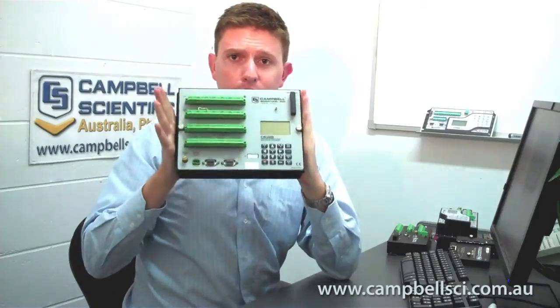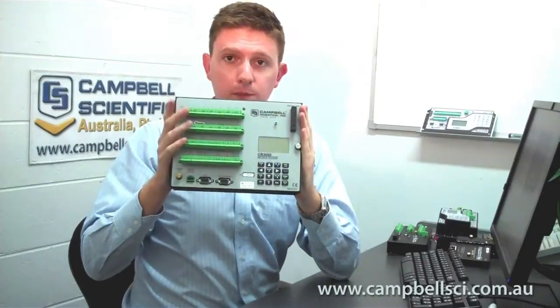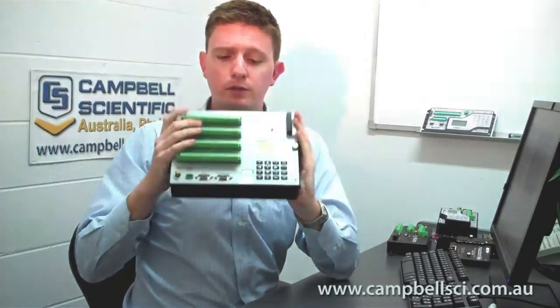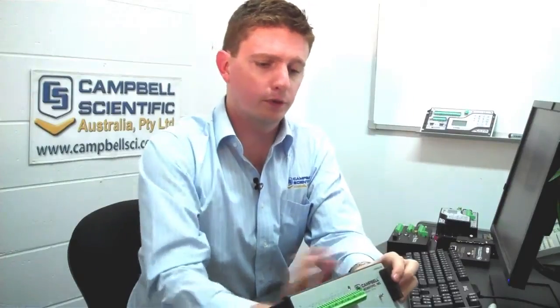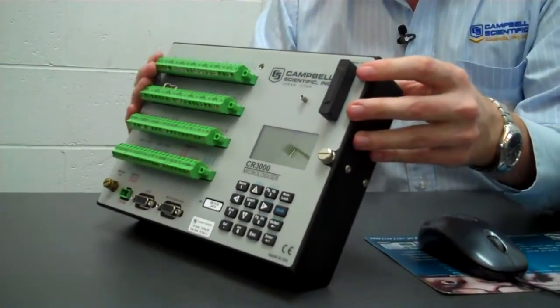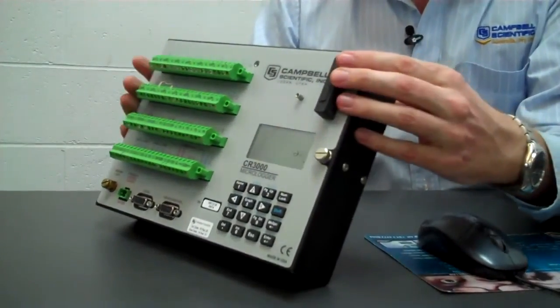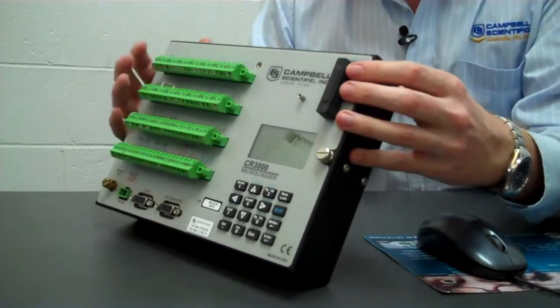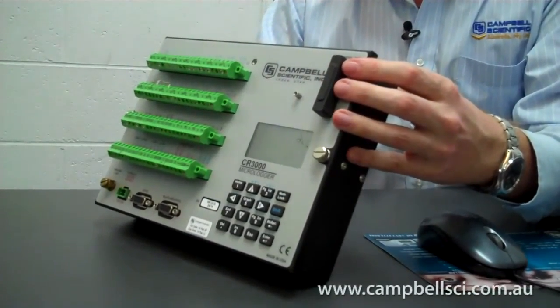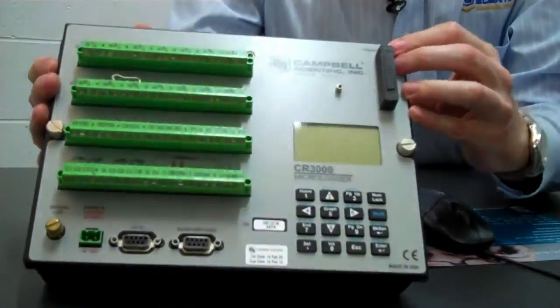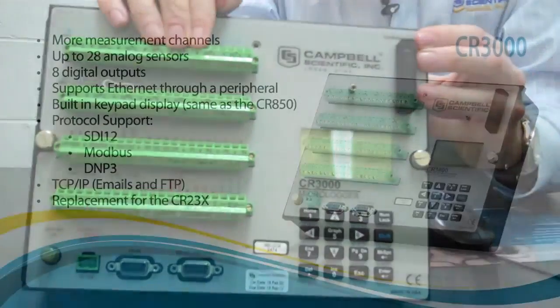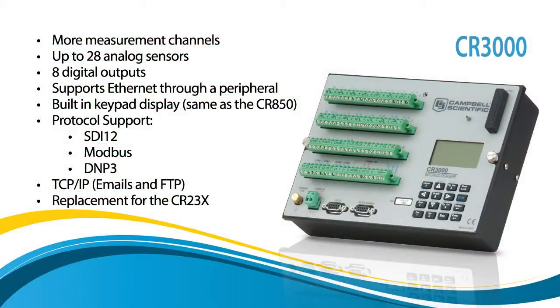The last one on our list is that big one there — the CR-3000. It's the big boy of the group and fits above the CR-1000 in our scheme of loggers. It has a lot more measurement channels — 28, as opposed to 16 for the CR-1000 — plus 8 digital outputs, a keypad display, and a peripheral port. It has the same RS-232 and CSIO ports, same programming language and instructions, and it can do emails, FTPs, and SMS — all the same things the CR-1000 and CR-800 can do. But it has a faster processor, so it can do more processing in the same amount of time.